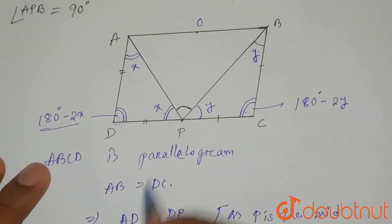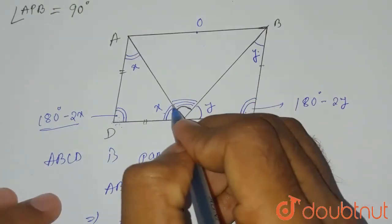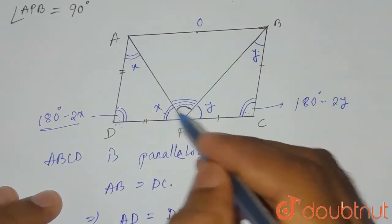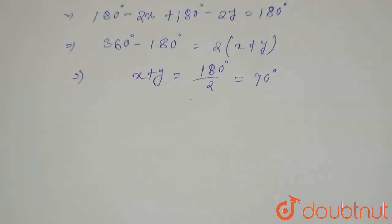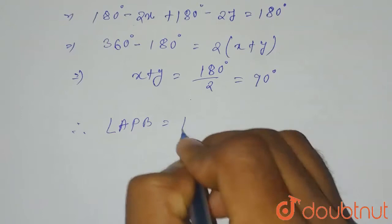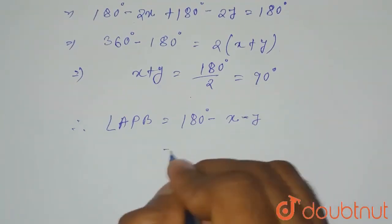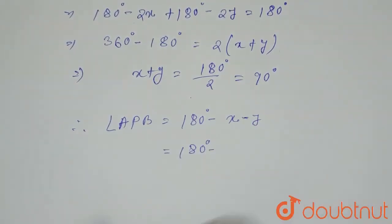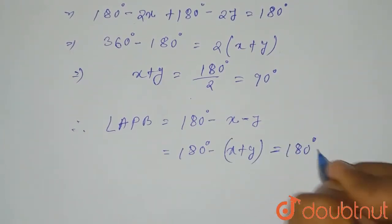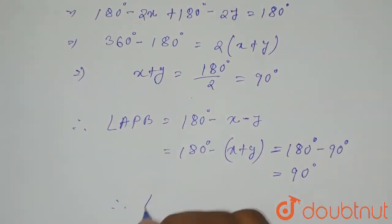Now looking at the diagram, the angle APB equals 180° minus x minus y. So angle APB = 180° − (x + y) = 180° − 90° = 90°.